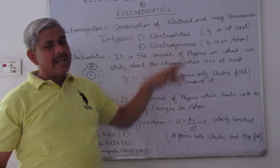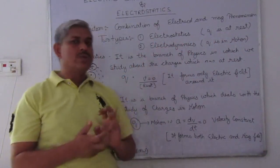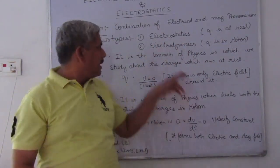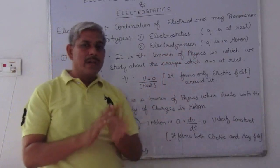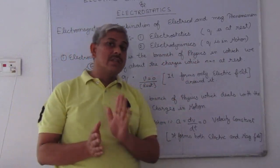Electrostatics is the study of physics, the branch of physics which deals when the charge is at rest. And electrodynamics, that means it is a branch of physics which deals with the study of charge when the charge is in motion.